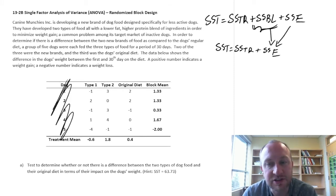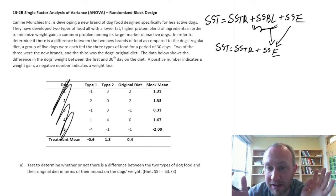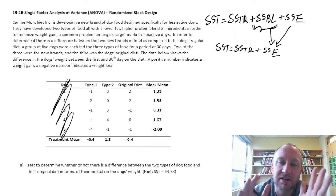Sum of Squares treatment is not going to be affected by how we treat the data. If we treat this as a completely randomized design, or if we treat this as a randomized block design, SSTR is going to be the same.